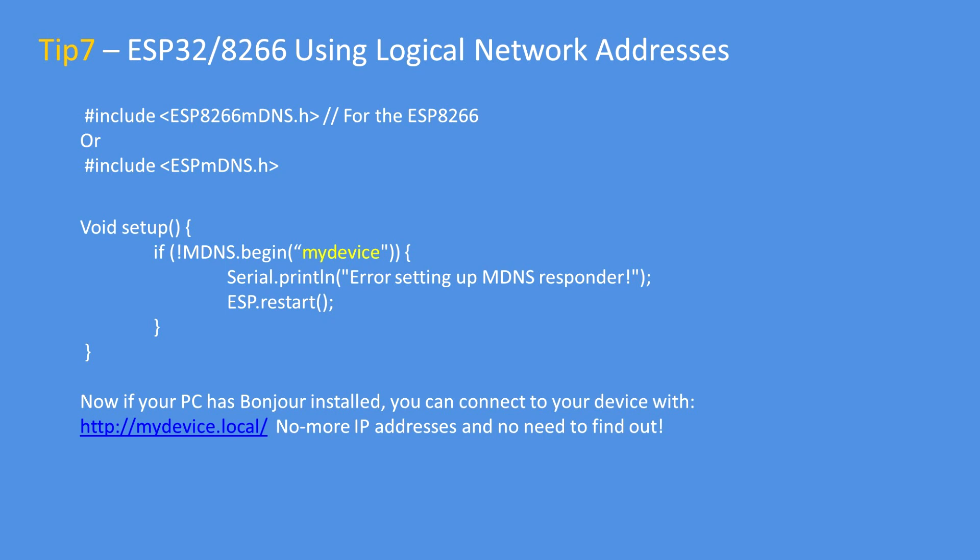My final tip is to use logical names. Rather than developing an IP-based ESP solution and trying to find the IP address by monitoring the serial port, you can use the multicast domain name server (mDNS) service to define a logical name for your device — 'mydevice' in this example. You can then use 'mydevice.local' in your browser, which makes life much more convenient. It only works if your PC or Mac has Bonjour installed, though some of the later browsers do support that service.